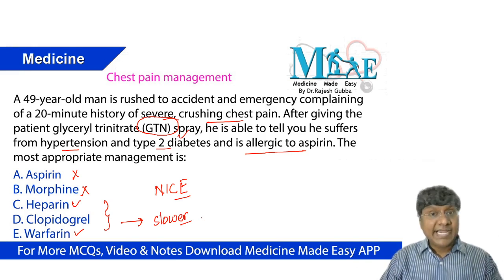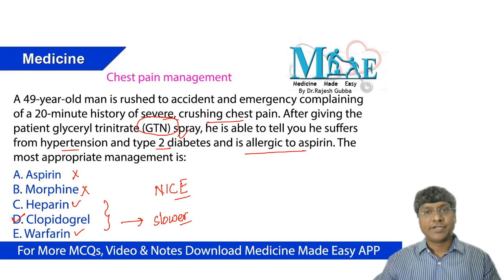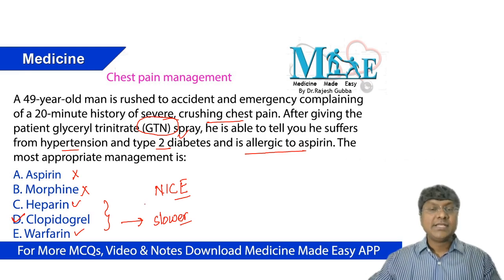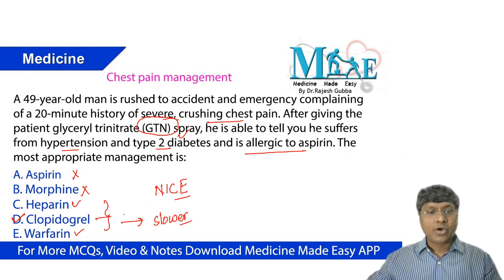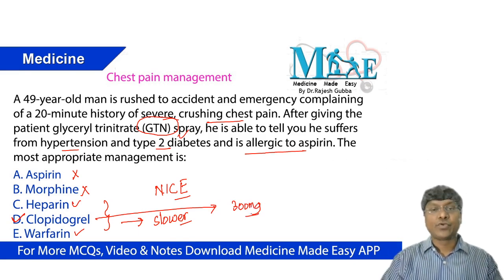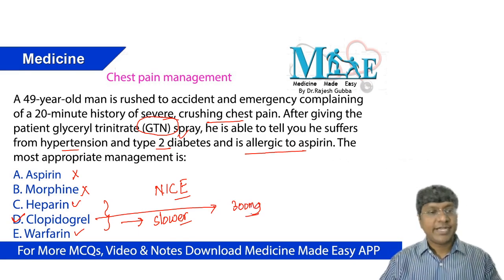The ideal drug that needs to be given in this particular patient is clopidogrel. If the patient has acute coronary syndrome, how much clopidogrel should be given as a loading dose? It should be given as 300 milligrams of clopidogrel as the loading dose.